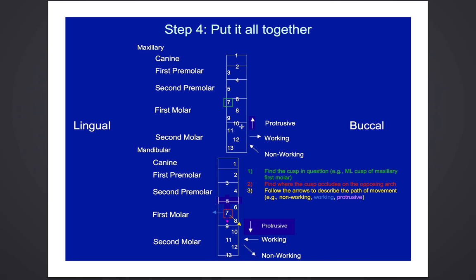Step four, we're going to put it all together. For example, we're going to focus on the mesiolingual cusp of the maxillary first molar. In these board questions, take it piecemeal: start at the largest point of organization — go to the maxillary arch, then which tooth, the first molar, then which cusp, the mesiolingual cusp. Step two: find where the cusp occludes on the opposing arch. We have a seven here for the mesiolingual cusp, and we come down to the seven — that's the spot where the mesiolingual cusp of the upper first molar occludes on the lower arch.